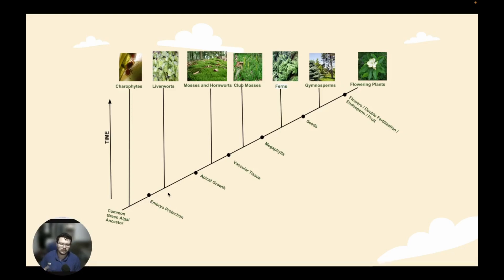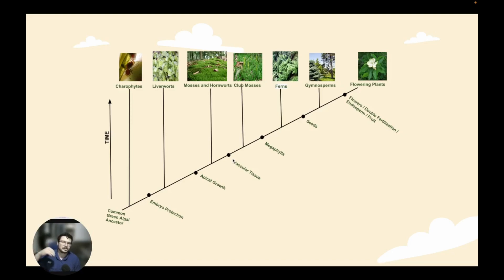Once we have embryo protection, we have some of the basic tenants for life on land, which would have given way to the liverworts. After the liverworts, we start to get apical growth of the apical meristem, which we'll talk about on Thursday. The apical meristem would have allowed us to produce mosses and hornworts. After the mosses and hornworts, we get vascular tissue production — these are our xylem and phloem. Phloem flows in both directions; xylem only moves nutrients up.